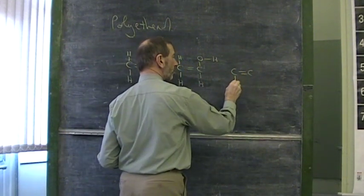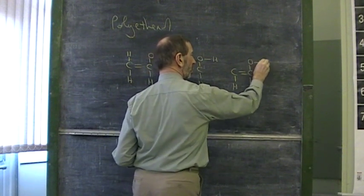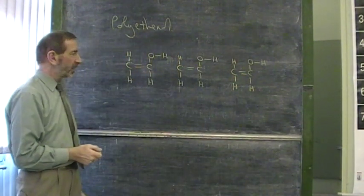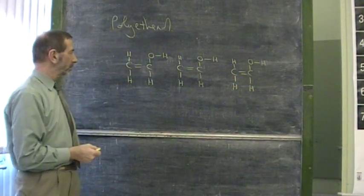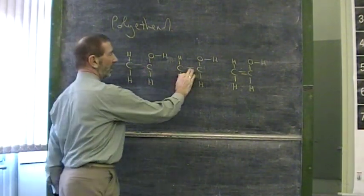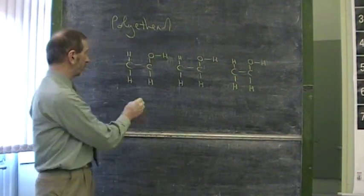Now the unusual property that this has is that it's a plastic which dissolves in water. Now why should a polymer made from these monomers be soluble? Well let's polymerize this first of all. Addition polymerization. The carbon to carbon double bonds break, and the individual monomers join together.